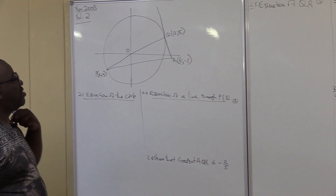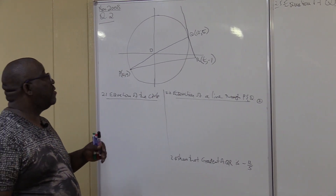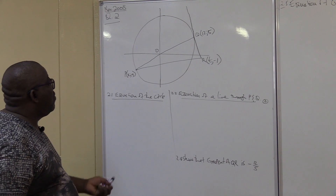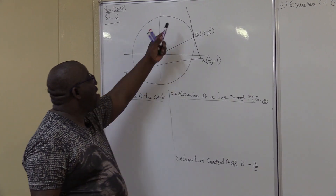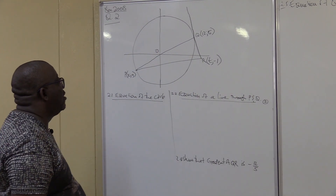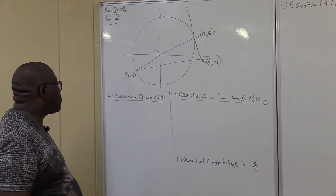This was November 2008, it was the second question. This is the diagram that we are given. That line there, QR, is a tangent. O is the origin.